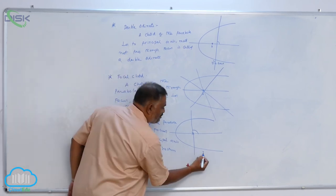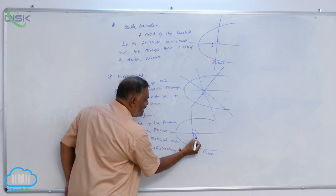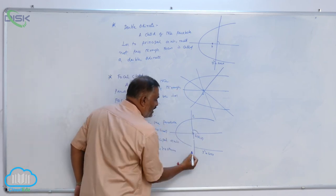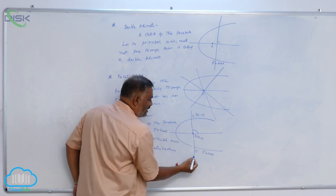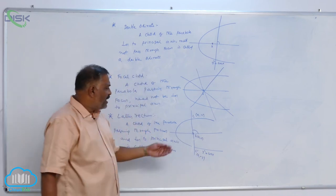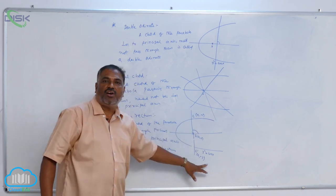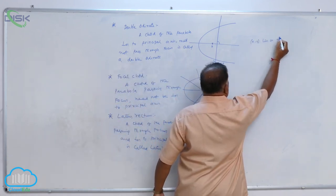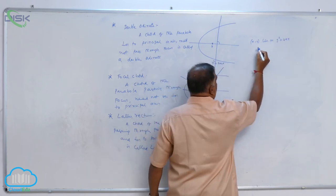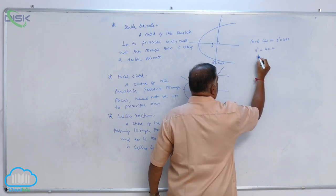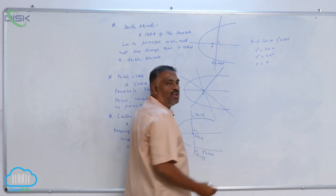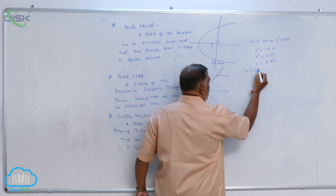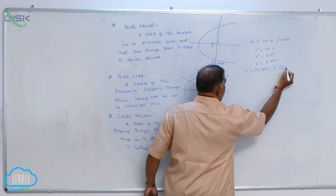For the standard parabola y² = 4ax, the focus is at (a, 0). Taking points L and L' on the latus rectum, L is (a, y) and L' is (a, −y). Since (a, y) lies on y² = 4ax, substituting gives y² = 4a·a = 4a², so y = ±2a. Therefore, L becomes (a, 2a) and L' becomes (a, −2a).